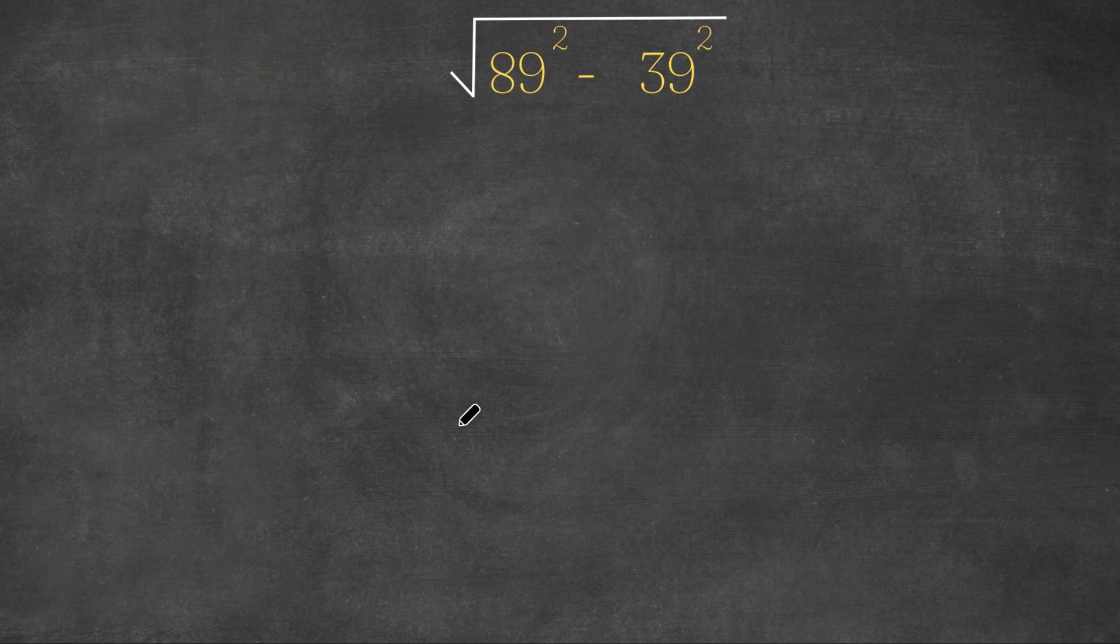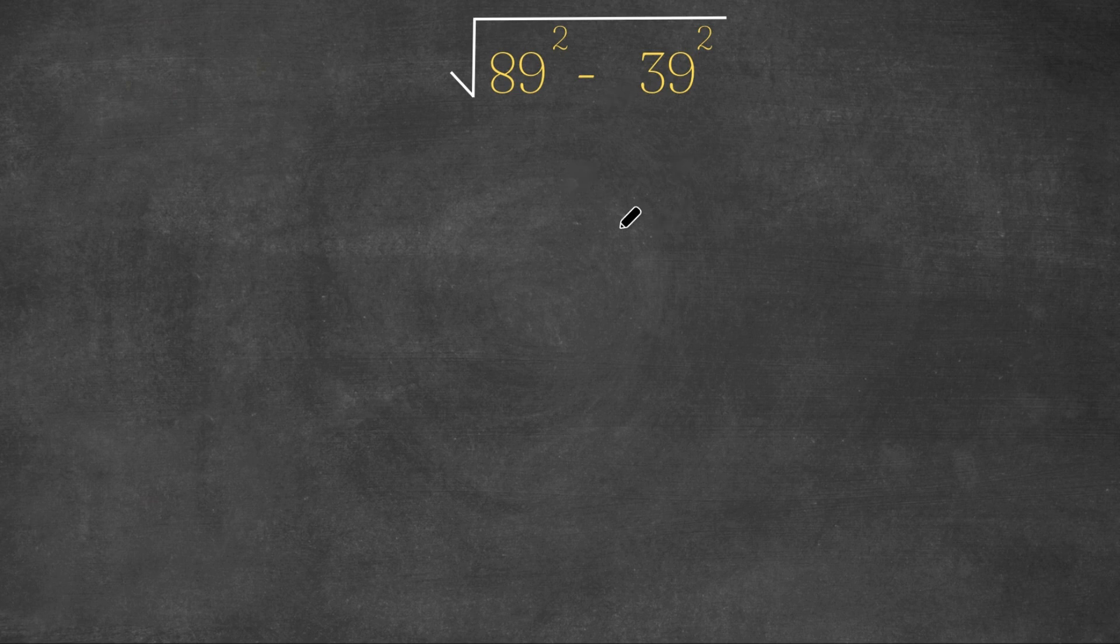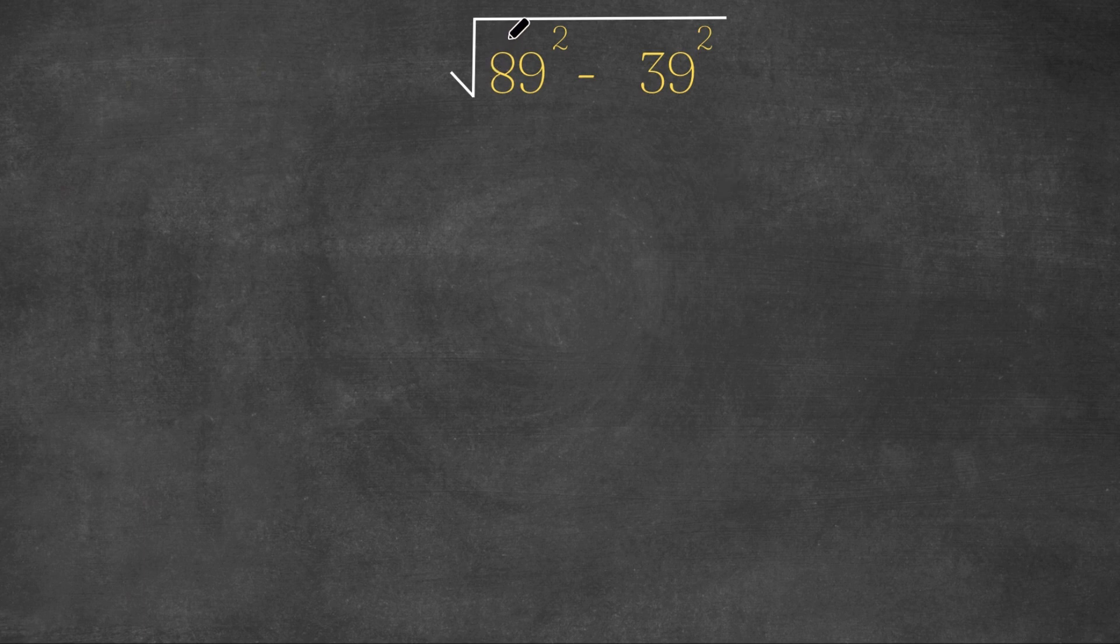Hey guys, welcome back to Qlik Academics. In today's video I'm going to be teaching you guys how to solve this exponential problem without a calculator. So we have the square root of 89 squared minus 39 squared.